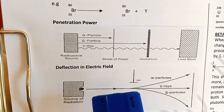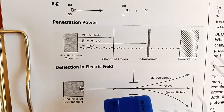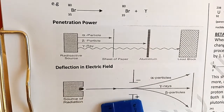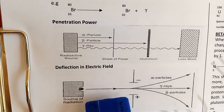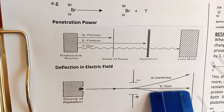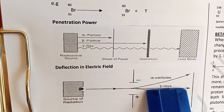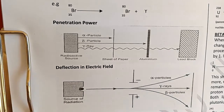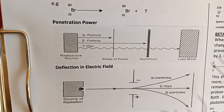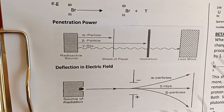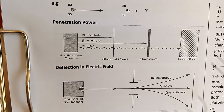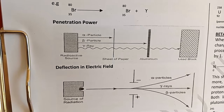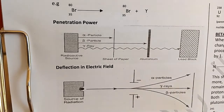Beta particles, being negatively charged electrons, are attracted toward the positive terminal of the electric field. Gamma rays, having no charge, pass straight through and are not deflected in either an electric or magnetic field — they will not be deflected to either the positive or negative side.